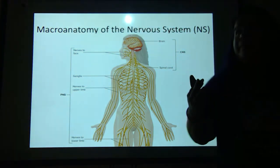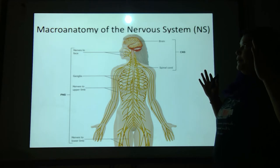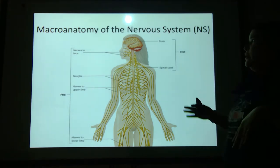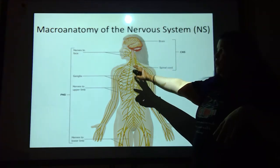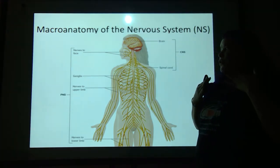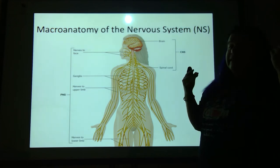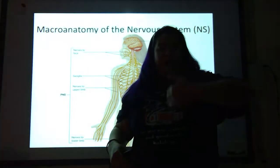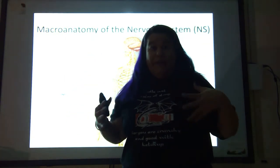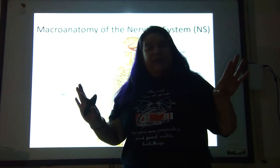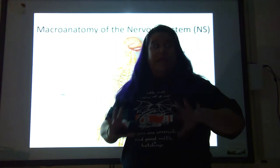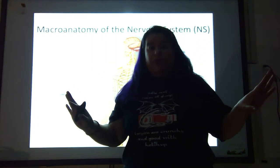Your nervous system is made up of primarily your brain, your spinal cord, and the nerves. Brain and spinal cord are your central nervous system — they are located dead center in the middle of your body. Anything else that is not brain and spinal cord is automatically going to be peripheral nervous system.